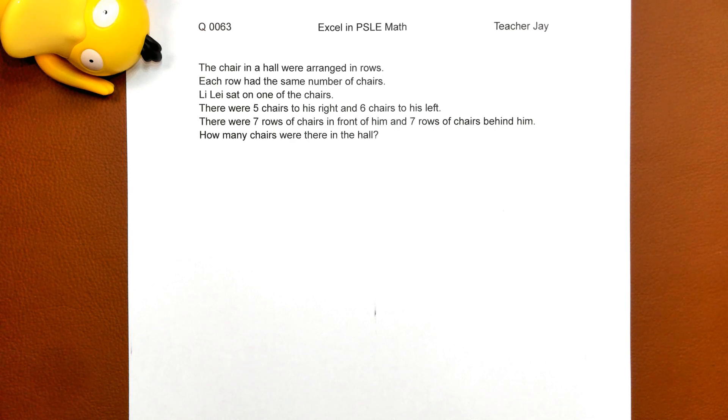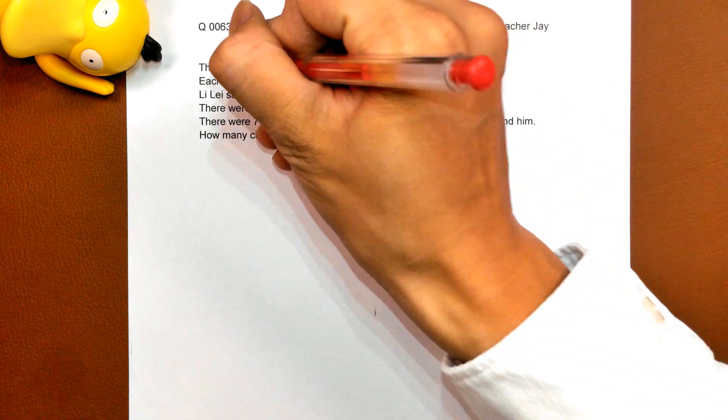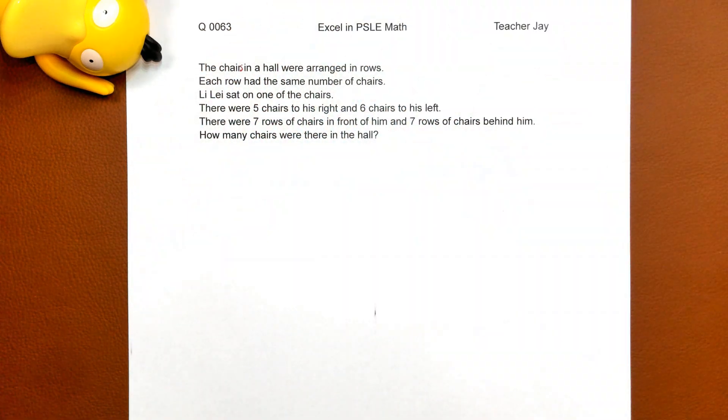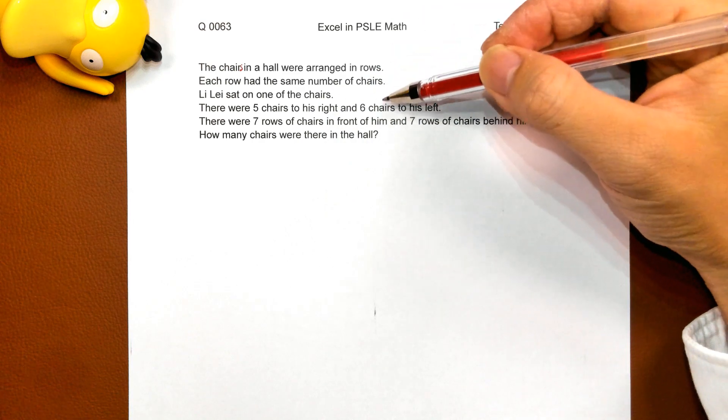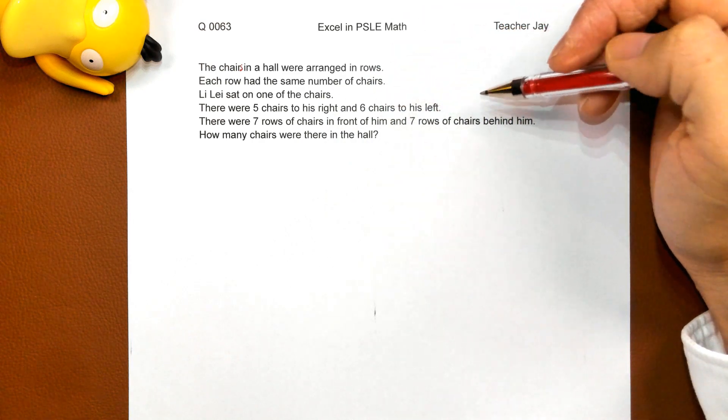The chairs in a hall were arranged in rows. Each row had the same number of chairs. Li-lei sat on one of the chairs, and there were five chairs to his right and six chairs to his left.